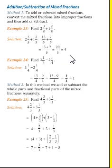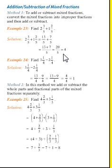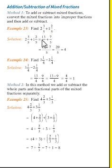We have found that 2 whole 3 by 5 plus 1 whole 2 by 5, after simplifying, gives us the answer 4. Now we'll see the next example — Example 24. It is also the same: here we'll convert into improper fractions and then add. Likewise, for subtraction, we also convert into improper fractions and then subtract.